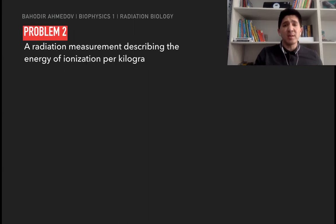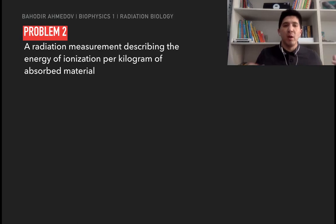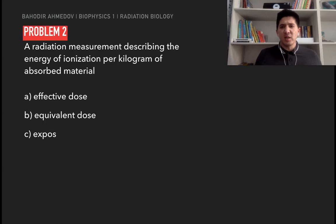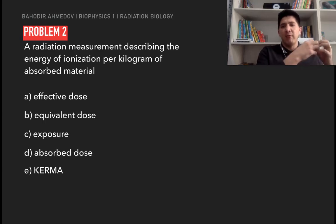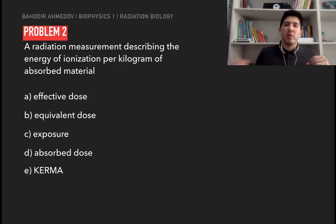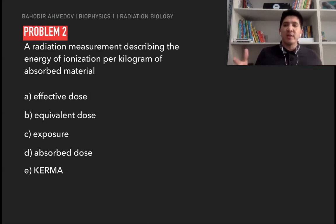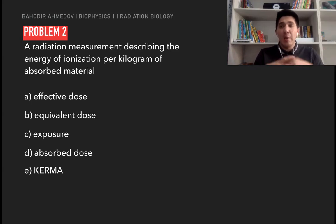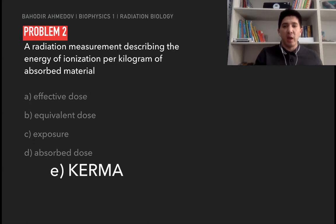Problem number two is also theoretical: the radiation measurement describing the energy of ionization per kilogram of absorbed mass is what? Ionization is when the photon transfers its energy to the electron. The amount of energy transferred from the photon to the electron per unit mass of material is called kerma.